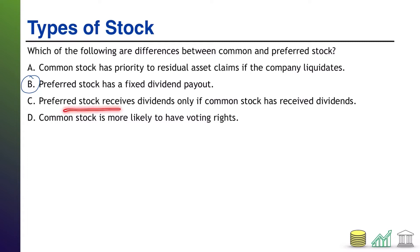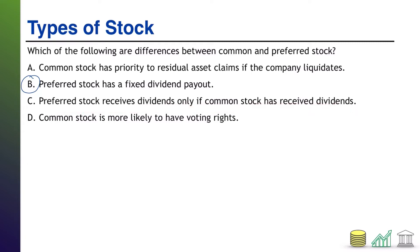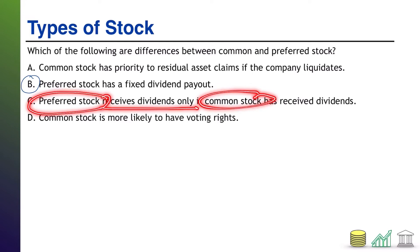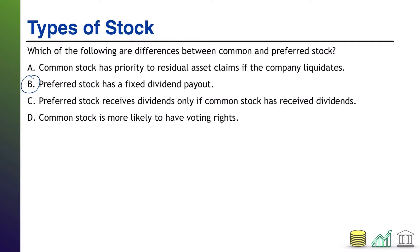C: preferred stock receives dividends only if common stock has received dividends. We have the terms flipped here. That is not true, because it is common stock that only receives dividends if the preferred stock has received their dividends first. And then D: common stock is more likely to have voting rights. That actually is true. So B and D were the correct answers in this situation.